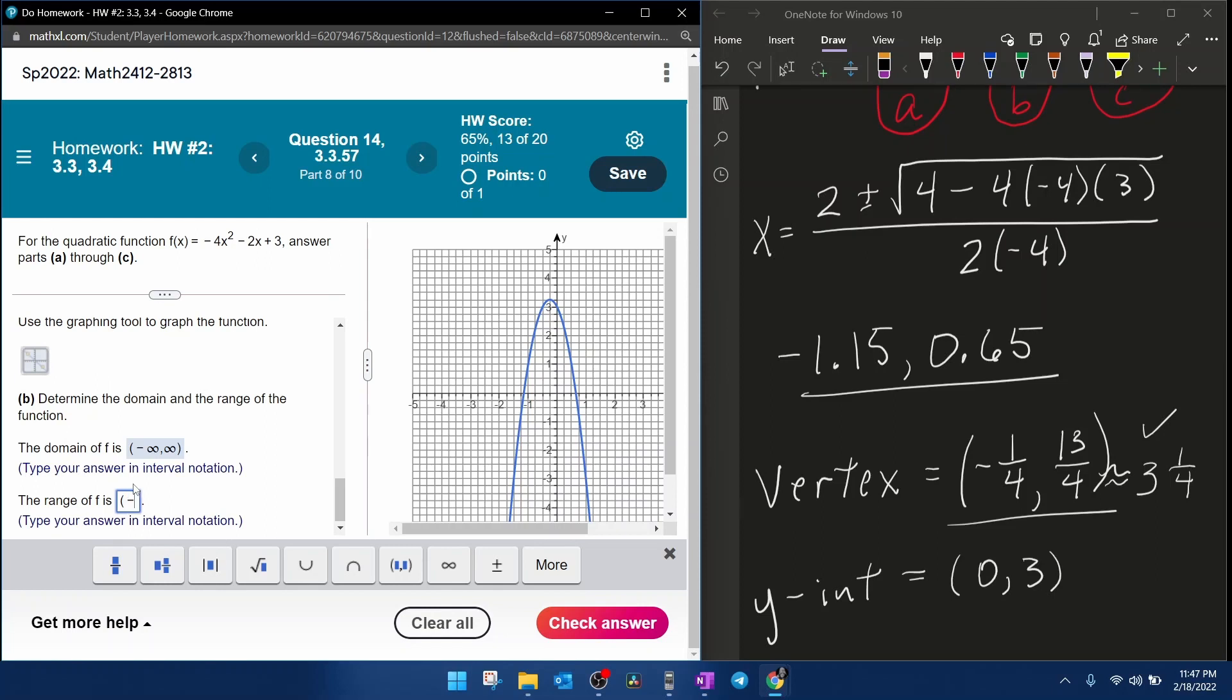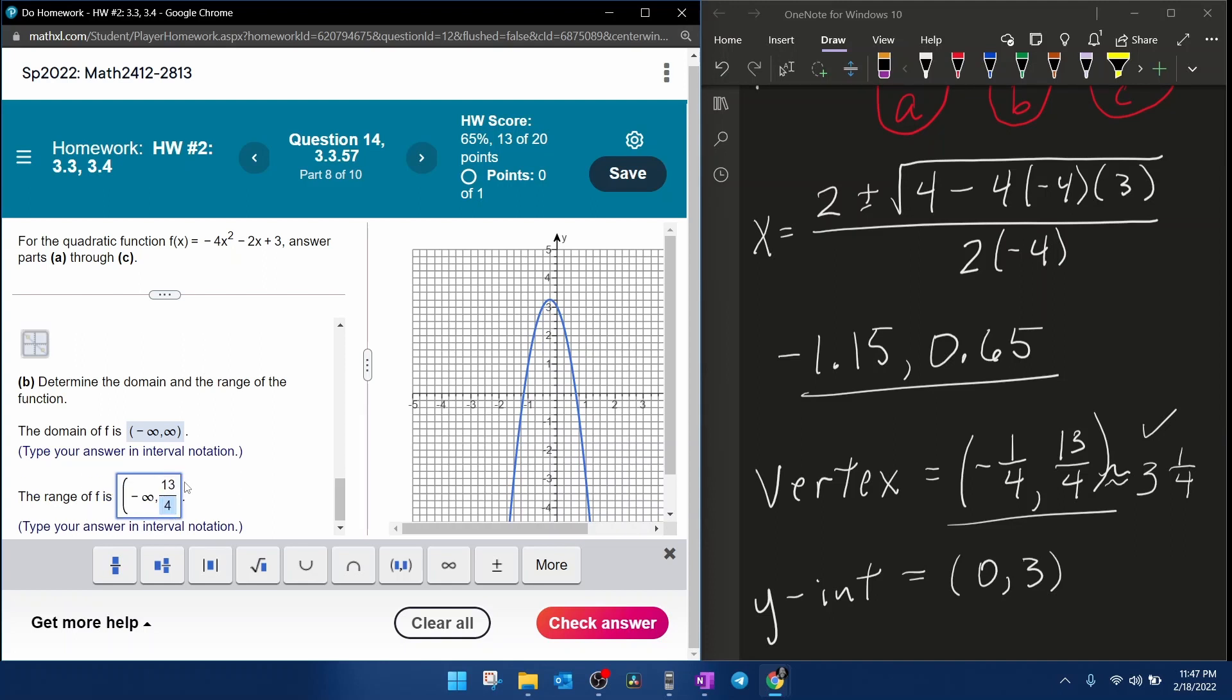we're going to start with negative infinity. That is the lowest y can be. Up to and including. Remember the vertex is an actual point on the graph. So the maximum height would be 13 fourths as an improper fraction using a bracket because the y is included.